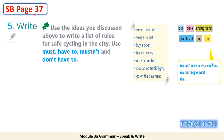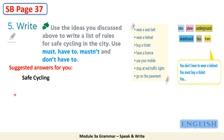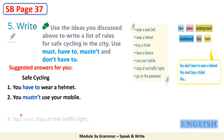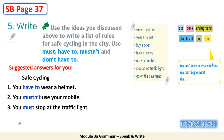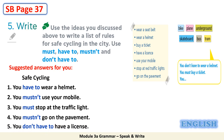Now move to part 5 in your student's book page 37. Read the given instructions: 5. Write — use the ideas you discussed above to write a list of rules for safe cycling in the city. Use must, have to, mustn't, and don't have to. Here is a suggested answer: Safe Cycling — 1. You have to wear a helmet. 2. You mustn't use your mobile. 3. You must stop at the traffic light. 4. You mustn't go on the pavement. 5. You don't have to have a license. You can make your own list of course.